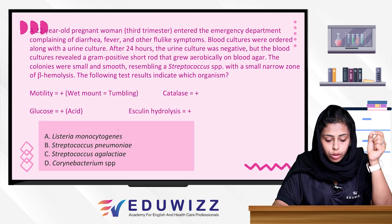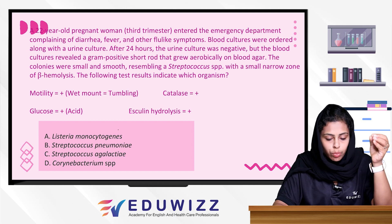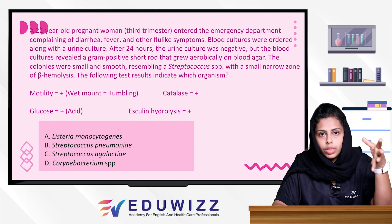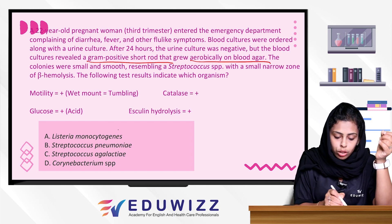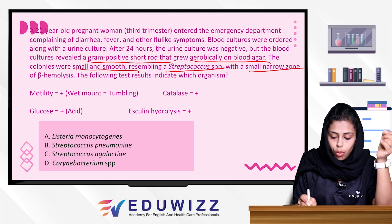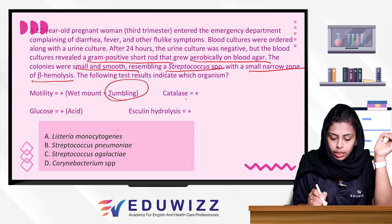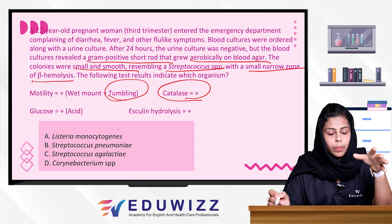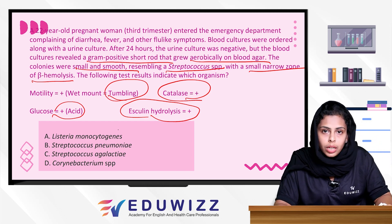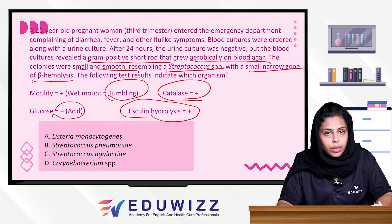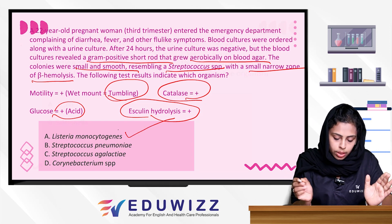Next question: A 22-year-old pregnant woman in the third trimester entered the emergency department with diarrhea, fever, and flu-like symptoms. Blood and urine cultures were ordered. After 24 hours, the urine culture was negative, but the blood culture revealed a gram-positive short rod growing aerobically on blood agar. Colonies were small and smooth, resembling Streptococcus species with a narrow zone of beta hemolysis. Key findings: tumbling motility, catalase positive, glucose and esculin hydrolysis positive — confirming Listeria Monocytogenes.